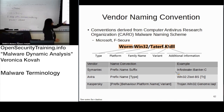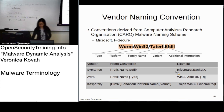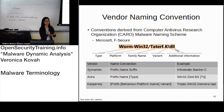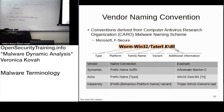Here's one example. The CARO — Computer Antivirus Research Organization — has a suggested naming scheme, though it's not forcing anybody. It says you can put the type first, then a colon, then what platform the malware is running on, then the family name — maybe sharing the same code base — then variant, then an exclamation point, then additional information. It's just a suggestion.